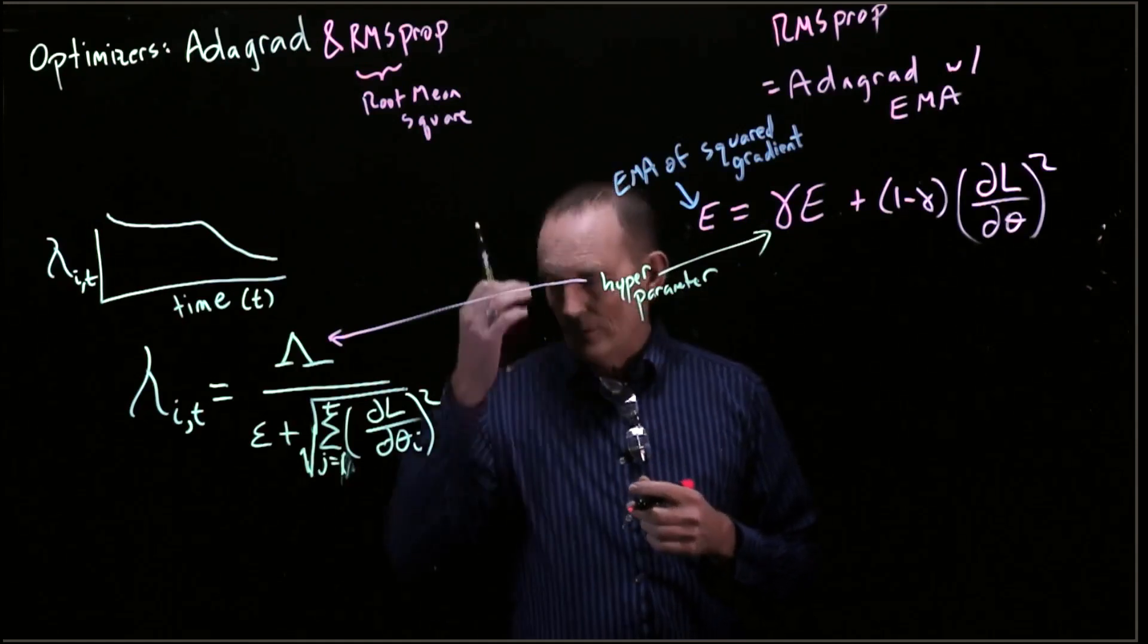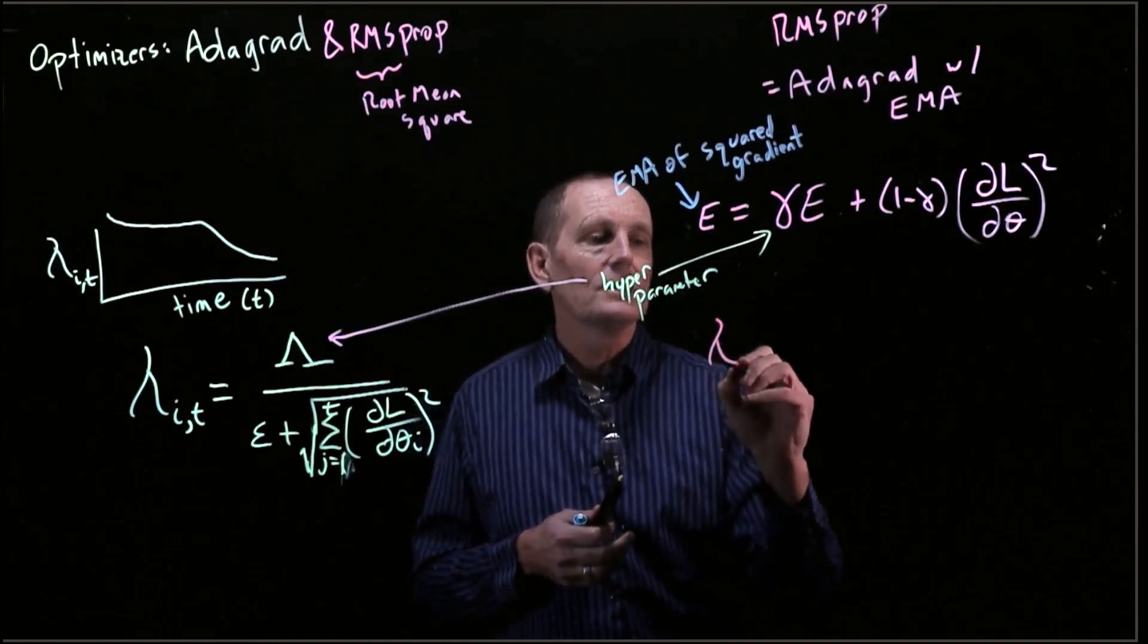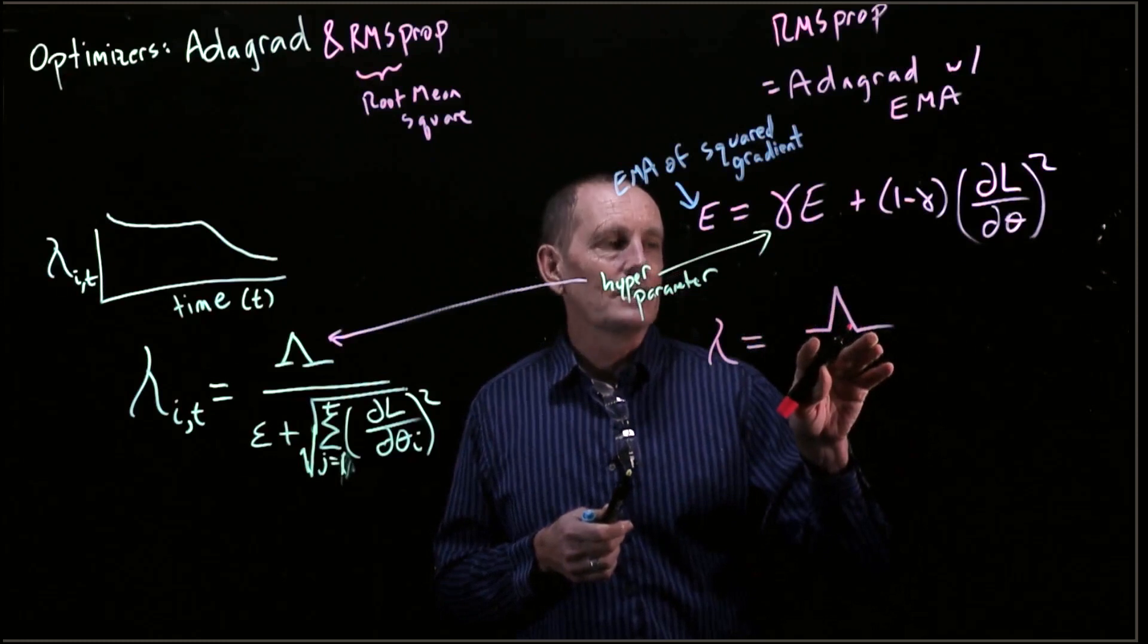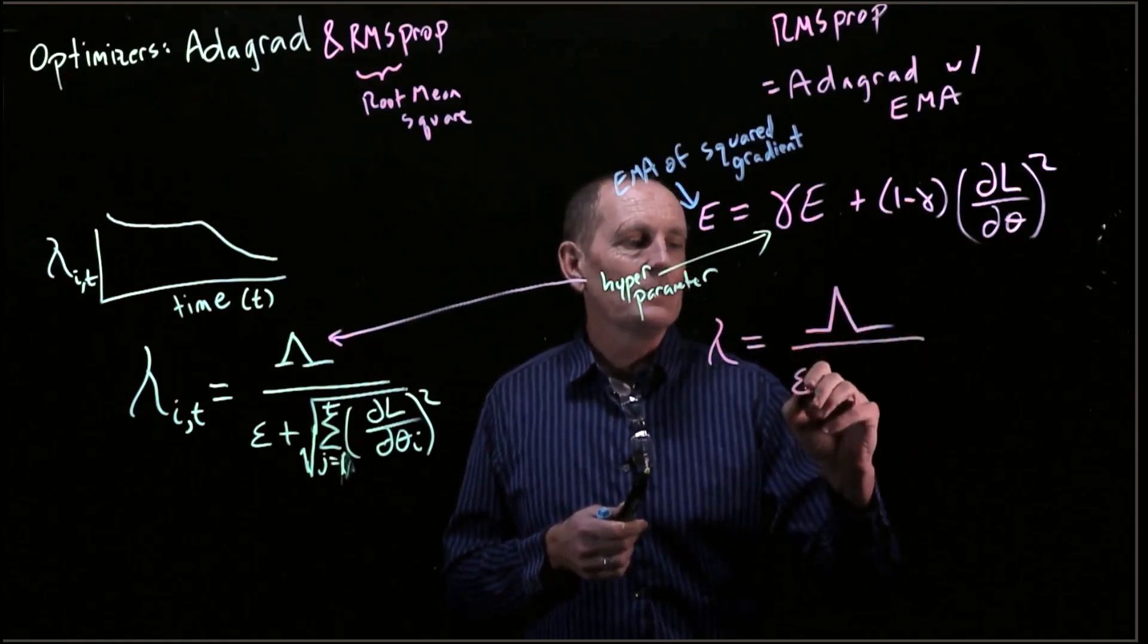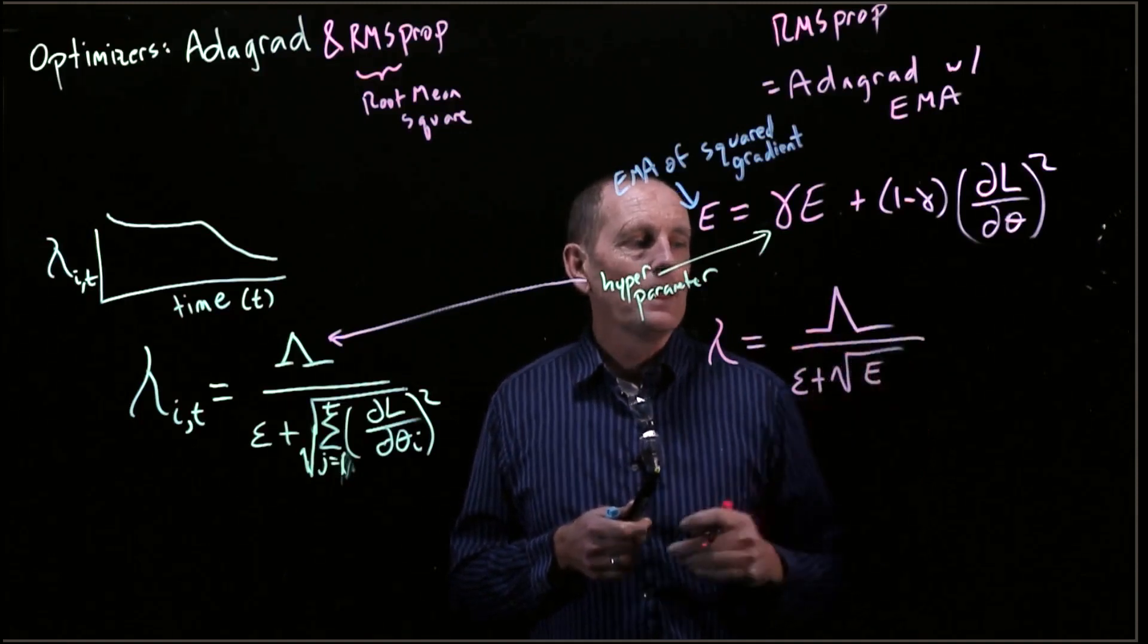And now let's calculate our lambda, which will be such a vector as well. So it's going to be equal to our single fixed constant capital lambda, divided by some epsilon plus square root of e.